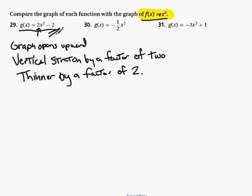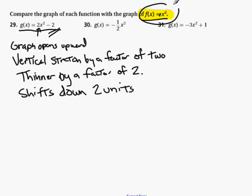And it has a vertical shift. It shifts down vertically 2 units. So it shifts down 2 units. Now, remember, this is all relative to the original function, or the parent function, f of x equals x squared.